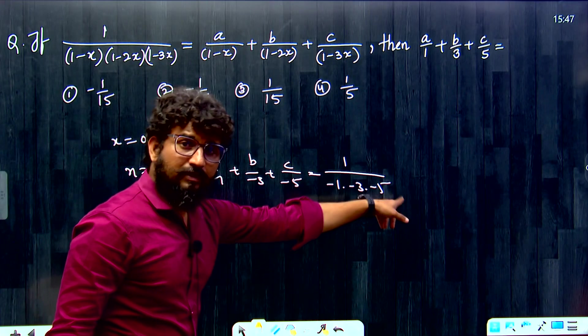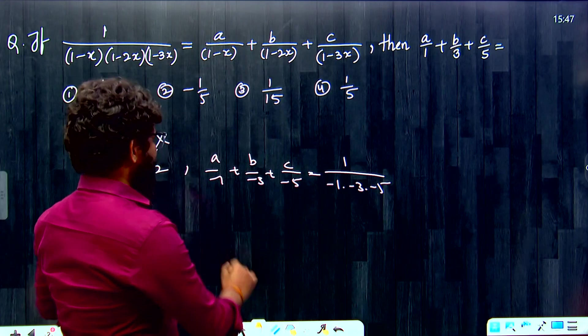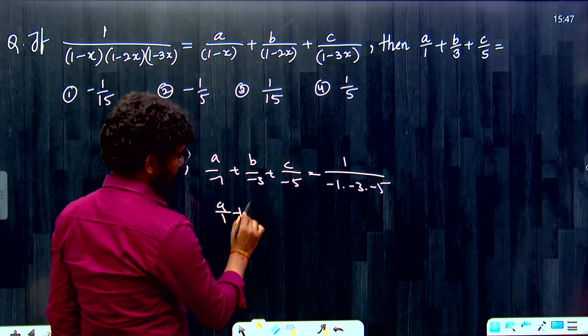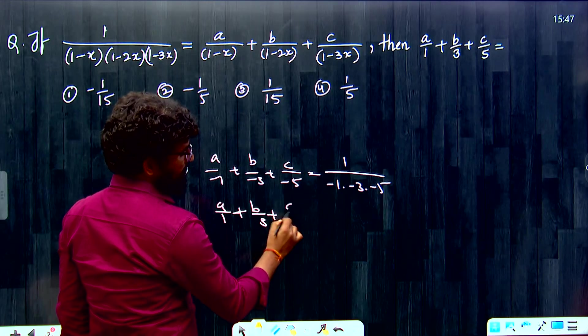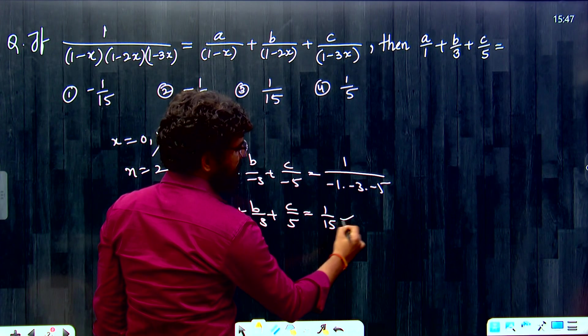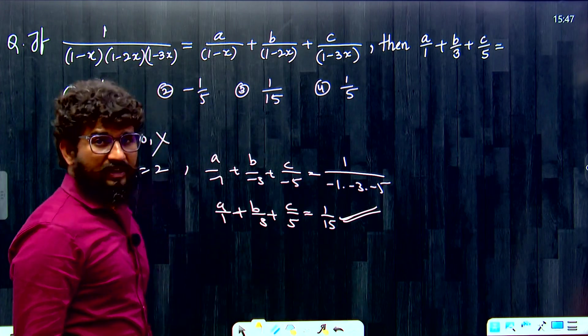Minus into minus plus, plus plus plus minus minus. Minus, minus cancel here. Our answer, that is A by 1 plus B by 3 plus C by 5 is equal to how much? 1 by 15. That is it. Very simple answering in partial fraction.